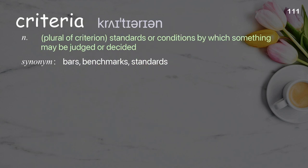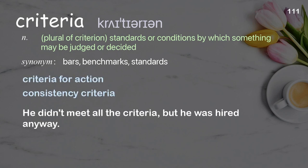Criteria: plural of criterion; standards or conditions by which something may be judged or decided. Examples: criteria for action; consistency criteria. He didn't meet all the criteria, but he was hired anyway.